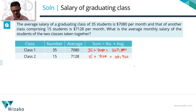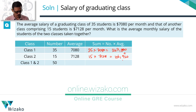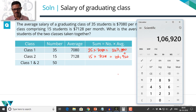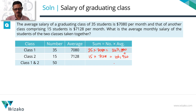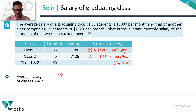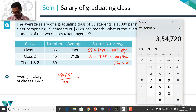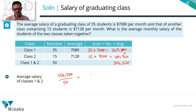So the sum of the salaries of the students of both classes taken together is going to be 247,800 plus 106,920, which works out to 354,720. The average salary is basically the sum 354,720 divided by the total number of students in the two classes taken together — divided by 50. So 354,720 divided by 50 equals 7094.4. That's all it takes — it's probably a one-minute question.